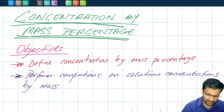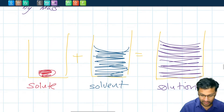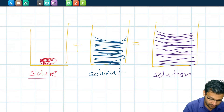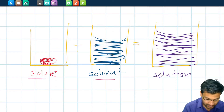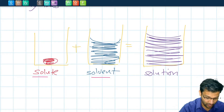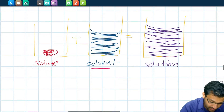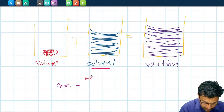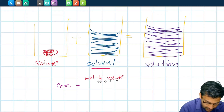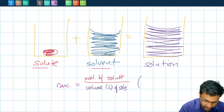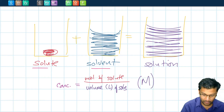Before we get into that, let's look at a brief overview of what we mean by concentration. A solution is composed of a solute and a solvent. Typically the solvent we'll deal with most in our course is water. So far we've defined concentration as equal to the moles of the solute divided by the volume in liters of solution — we call this unit molarity, or big M. It's moles over a liter.